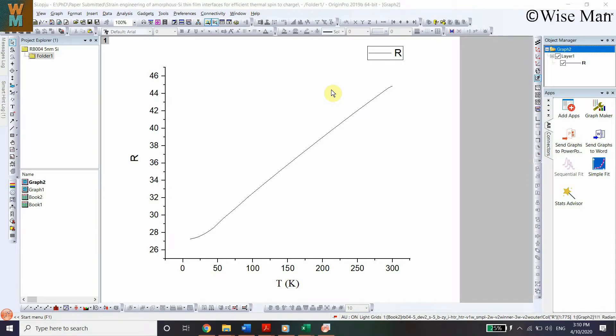Hi, welcome to this video on Origin. In this video we're going to see how you can change the default font style of graphs in Origin. As you can see, if I plot any graph it has the default font of Arial.